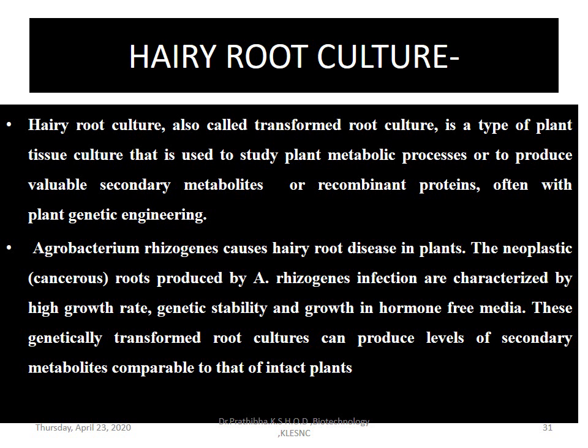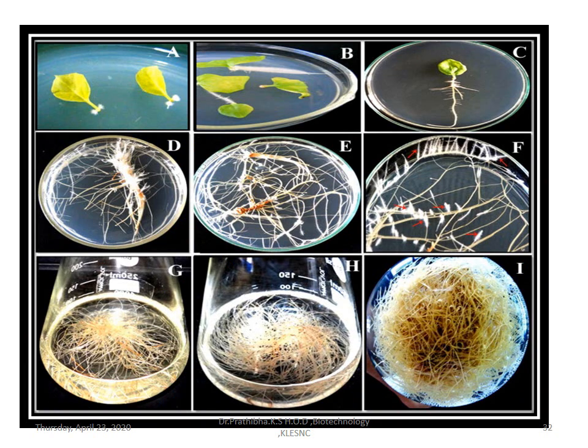Hairy root culture, also called transformed root culture, is a type of plant tissue culture used to study plant metabolic processes or to produce valuable secondary metabolites, recombinant proteins, and is often used with plant genetic engineering. Agrobacterium rhizogenes causes hairy root disease in plants. The neoplastic (cancerous) roots produced by Agrobacterium rhizogenes infections are characterized by high growth rate, genetic stability, and growth in hormone-free media. These genetically transformed root cultures can produce high levels of secondary metabolites compared to intact plants.